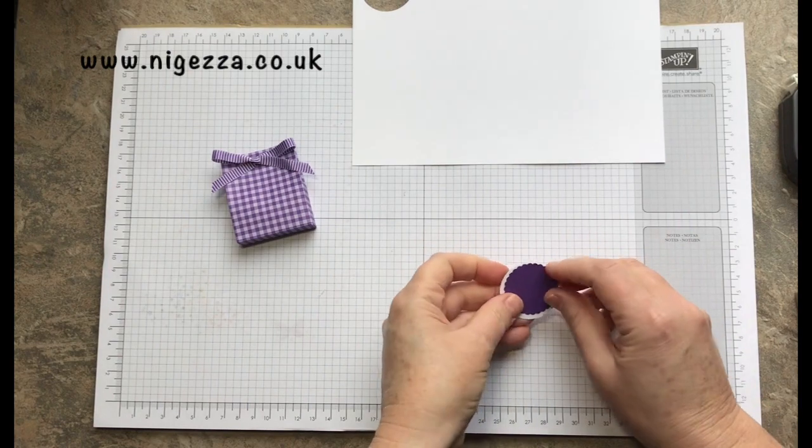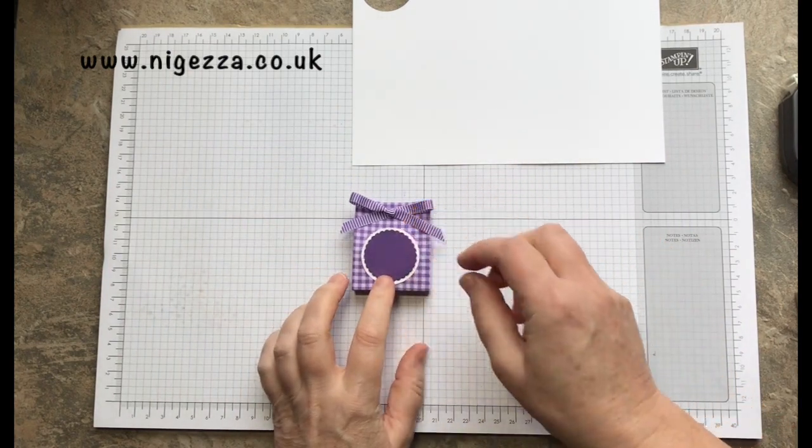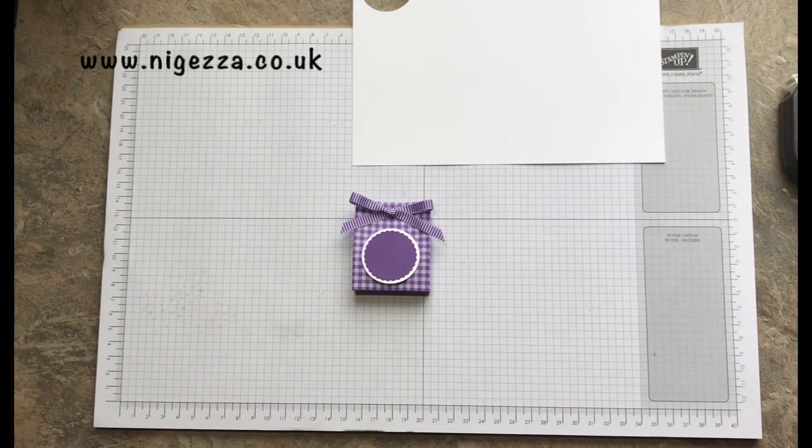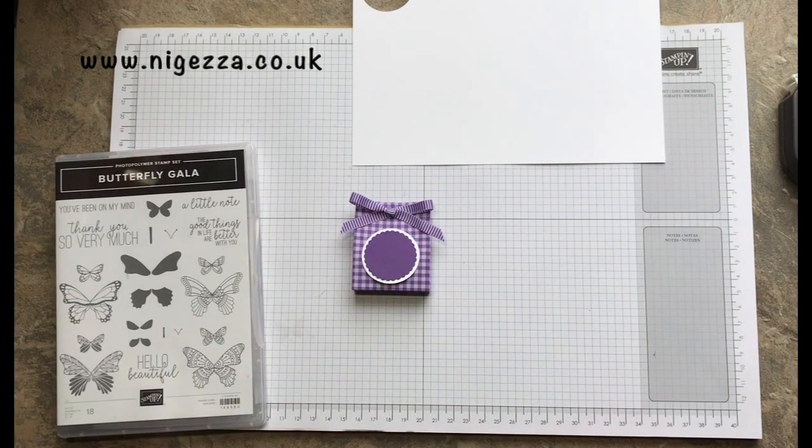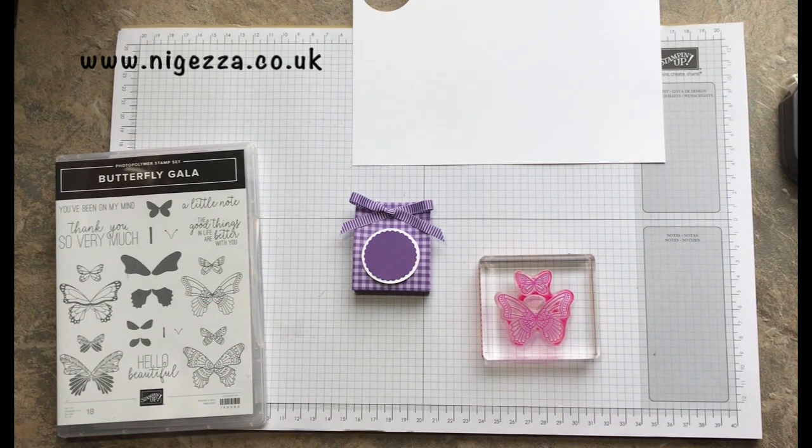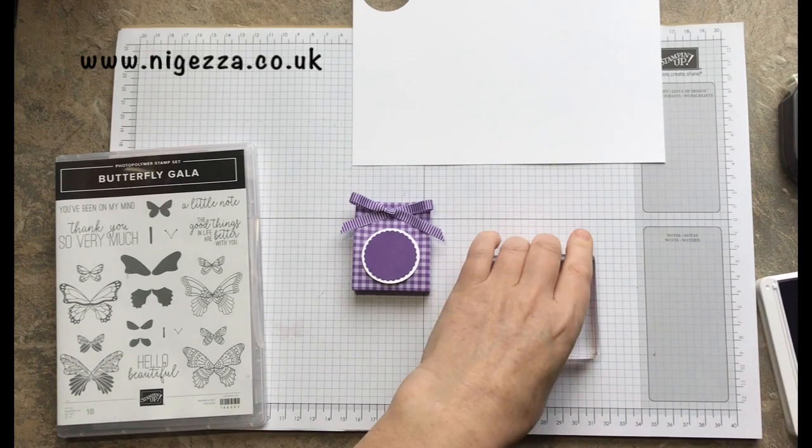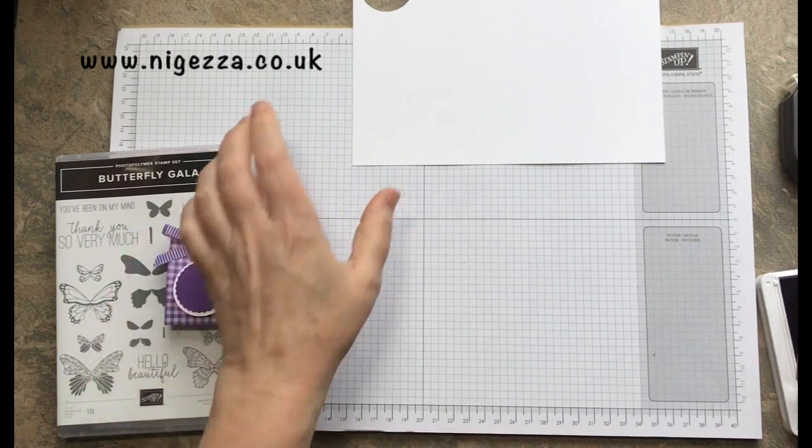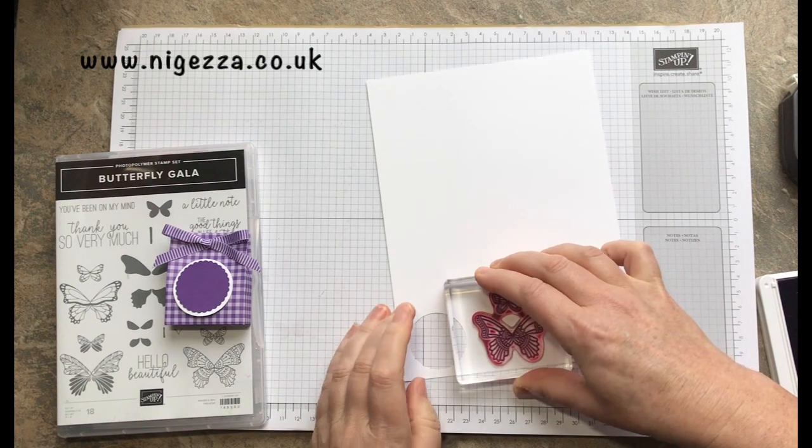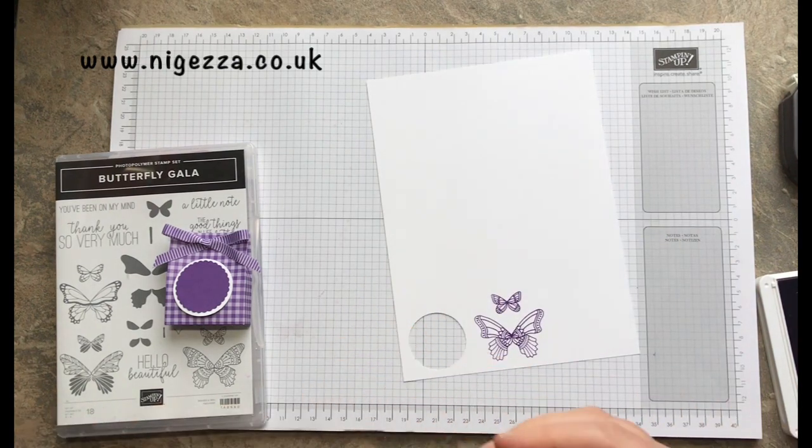I'm going to need that for stamping in a sec, and gorgeous grape scallop. Those two are going to get glued together, and then I'm going to put a butterfly on there. So I'm using butterfly gala, haven't used this for ages and I do love it. I'm gonna do a butterfly on it, so kind of couldn't get further from Christmas if I tried.